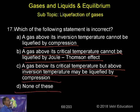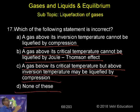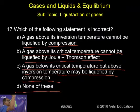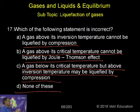Which of the following statements is incorrect? I have already explained two important things. There is a temperature called critical temperature — each and every gas will have a critical temperature. For example, carbon dioxide has a critical temperature of 31°C. Above 31°C, whatever pressure we apply to carbon dioxide, it will not be liquefied.